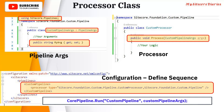If you want to invoke the pipeline at runtime, you can use CorePipeline.Run, where you will provide the pipeline name and the argument. This is how you can programmatically invoke the pipeline.